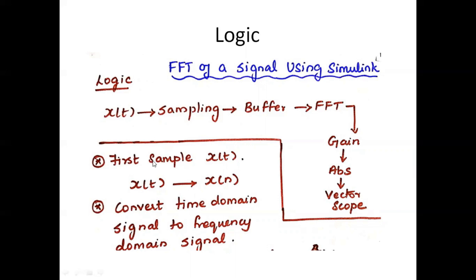First we have to sample x(t). x(t) will be converted to x(n) — the continuous time signal is converted to discrete — and convert the time domain signal to frequency domain signal with the help of the FFT model.